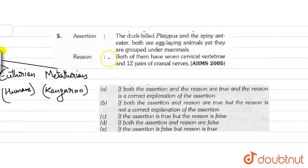And the reason given is that both of them have 7 cervical vertebrae and 12 pairs of cranial nerves. So the assertion is a right statement.